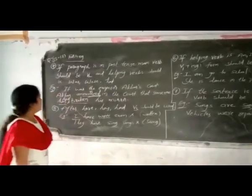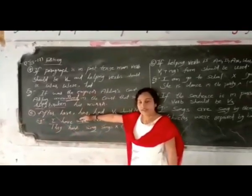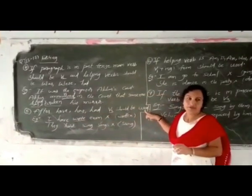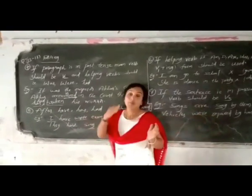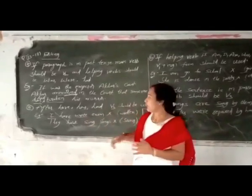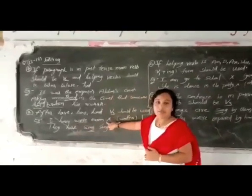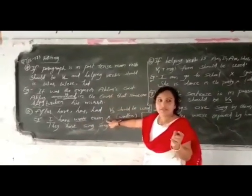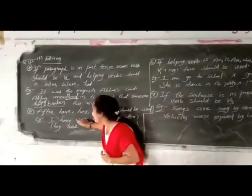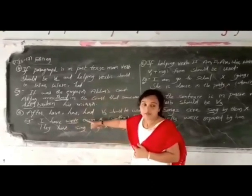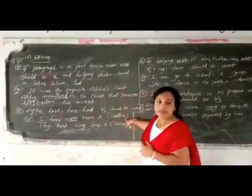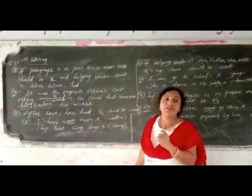Fifth rule: after 'have,' 'has,' or 'had,' V3 should be used. For example: 'I have right example' — 'right' is the mistake; it should be 'written.' 'I have written an exam' — that is present perfect tense, meaning it happened just now or just before.